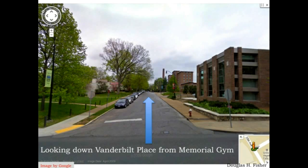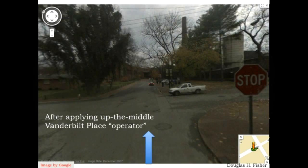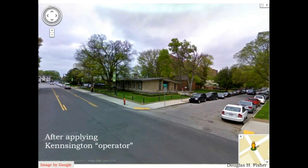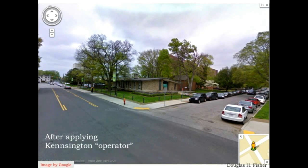Let's go back to our example of being at Memorial Gym and consider one possible action of going down Vanderbilt Place. This is going to take us to an intersection at the other end, and this will be a child of the Memorial Gym node. We could also take the action of going left, and this is where we would end up — the next intersection down the road at Kensington Place. We didn't know this when we took the action, but this would be a second child of the Memorial Gym node. Finally, going right out of Memorial Gym would land us at 25th Avenue Garage, Jess Neely — a third child of the Memorial Gym node.